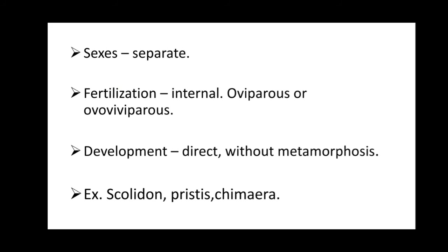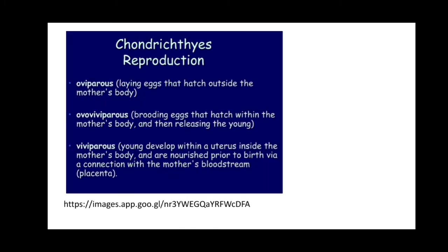Sexes are separate. Fertilization is internal — when fertilization occurs inside the body it is called internal fertilization. Organisms may be oviparous or ovoviviparous. Development is direct and without metamorphosis — no larval form and no metamorphic stages. Examples include Scolidon, Pristis, and Chimera. Oviparous organisms lay eggs that hatch outside the mother's body, like a hen that lays an egg, incubates it, and the chick hatches.